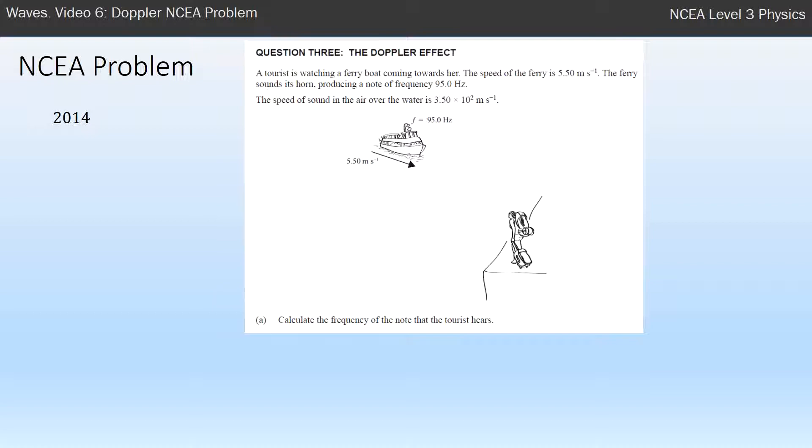The reason they write it like that is to show that they are sure of that value to three significant figures. All the numbers I've given you, 5.50, 95.0 and 3.50, are clearly to three significant figures, that's what our answer should be as well.